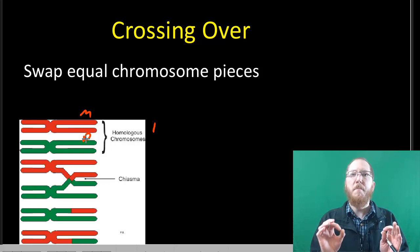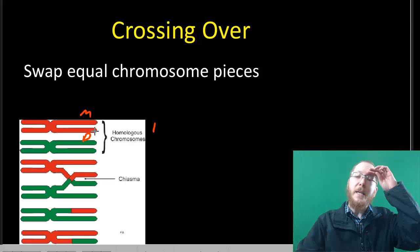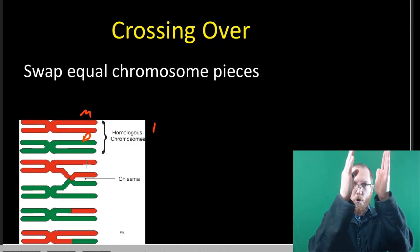They might not code for the same version of everything. One might say red hair, one might say brown hair, but ultimately they still code for the same general things. And so what you can do is you can swap pieces of these. So at the very beginning of meiosis 1, these homologues will line up together.